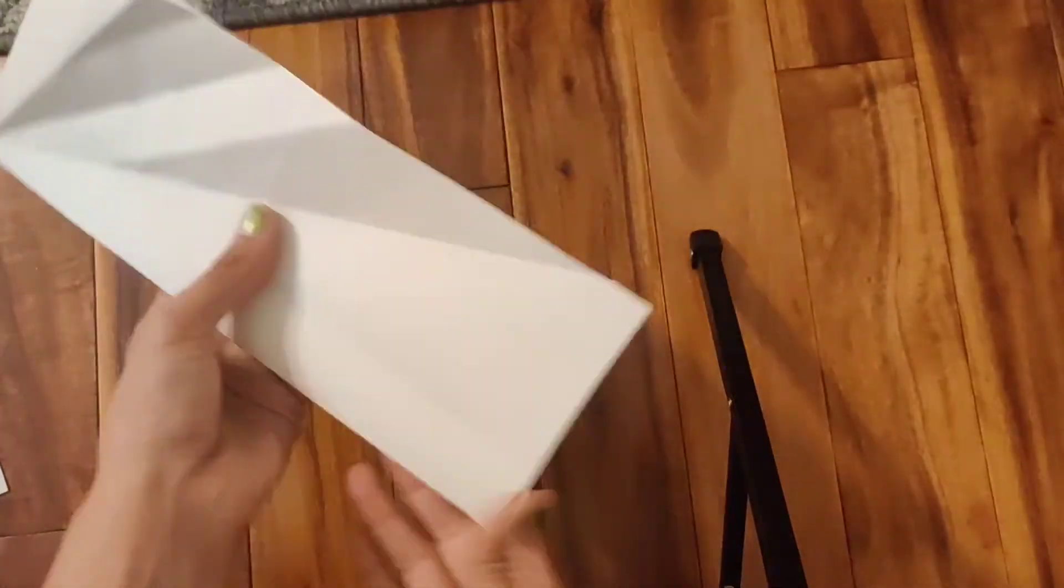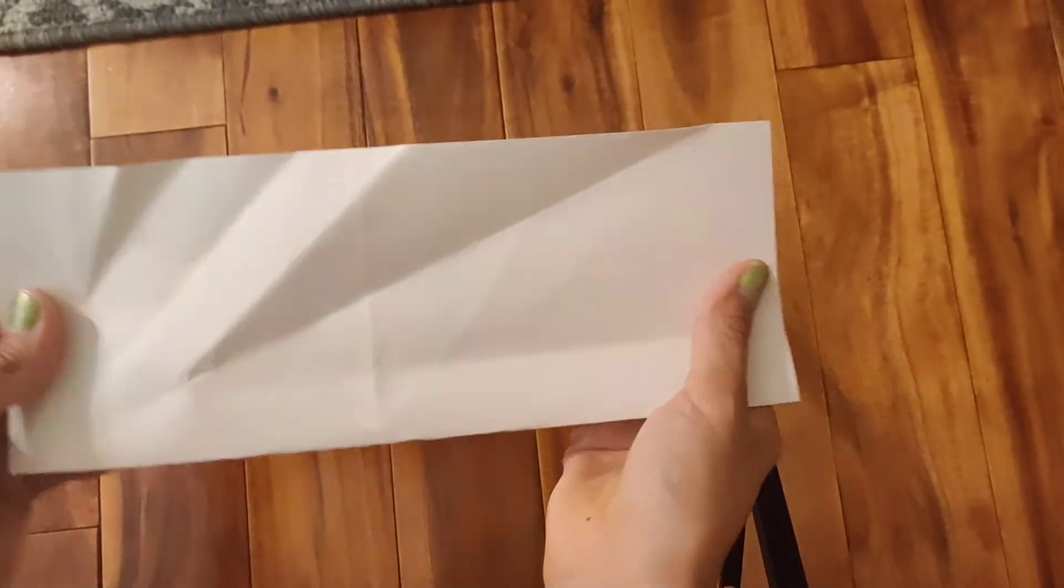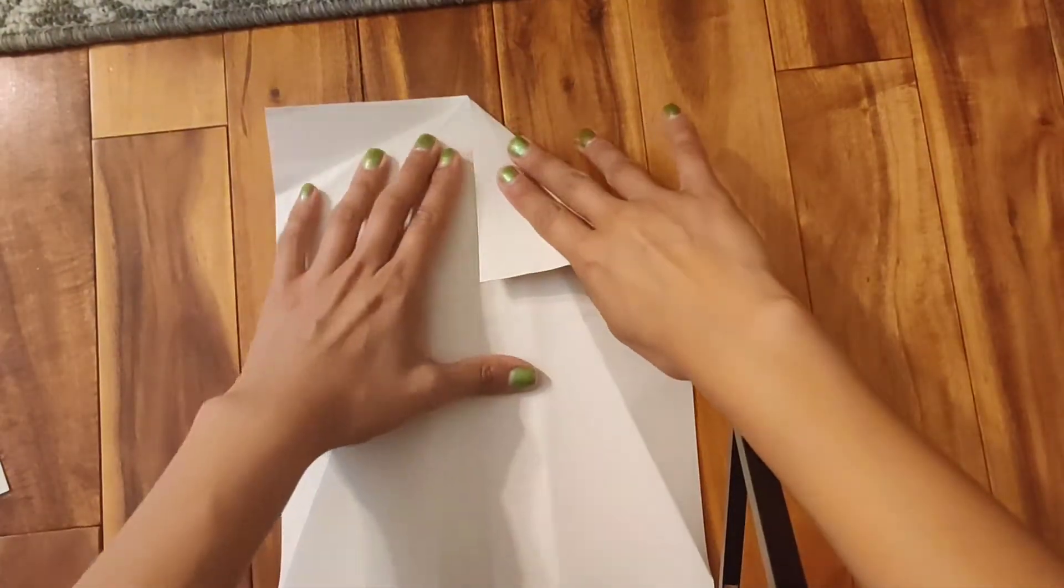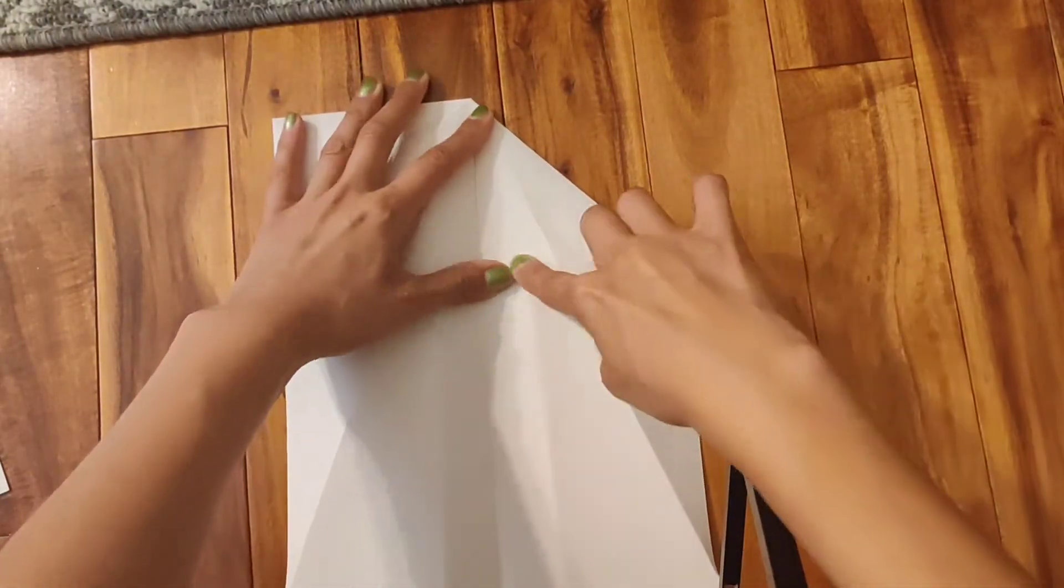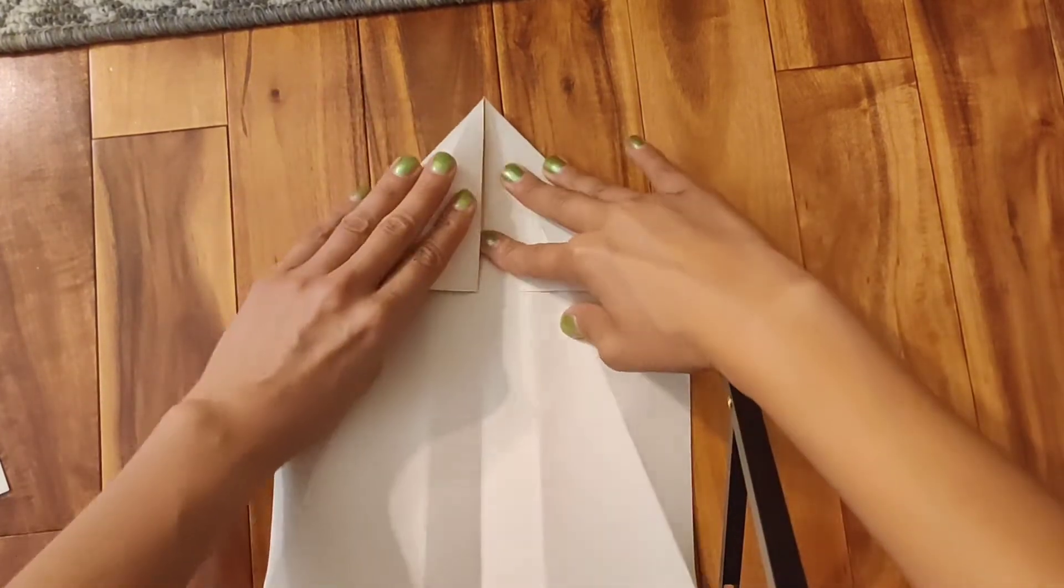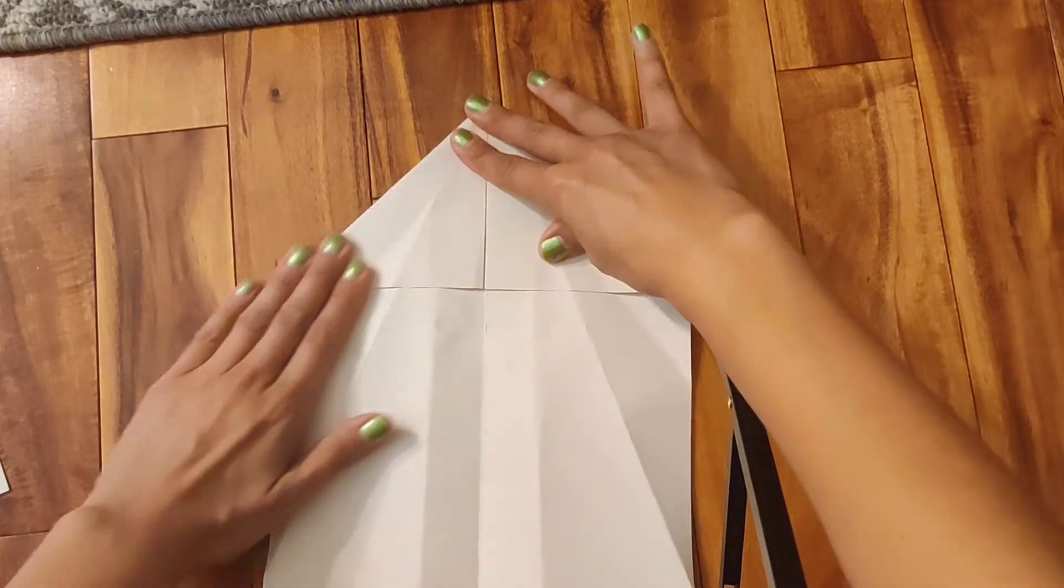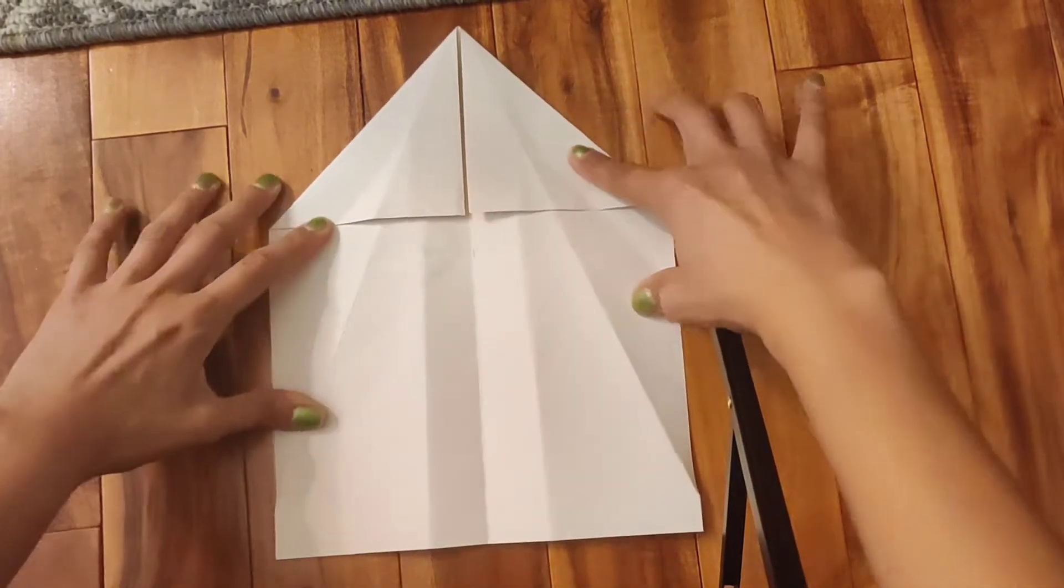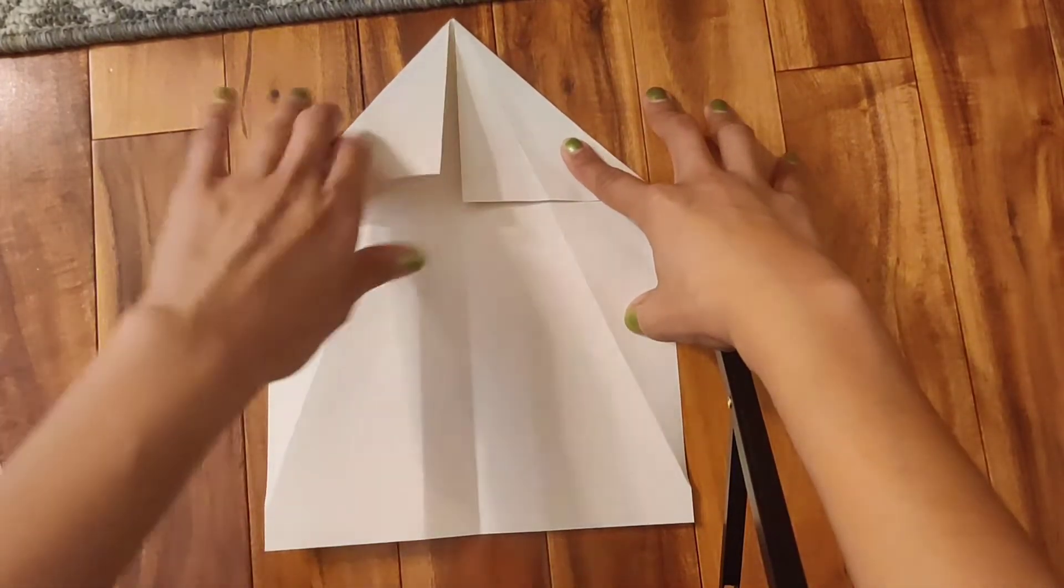So you're going to fold it in half. We call this the hot dog fold. After you're done, you're going to open it and you're going to fold one side in until it reaches to the middle of the first crease that you made. And you're going to do the same thing to the other side. So now you have like a little house that you made.